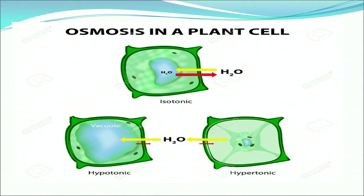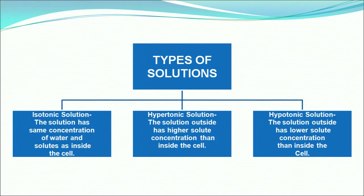Here is an illustration of how osmosis takes place in plant cells, showing three figures. Three types of solutions are isotonic, hypertonic and hypotonic solutions. Hypotonic solutions are those where the outside has lower solute concentration than inside the cell. In hypertonic solution, the solution outside has higher solute concentration than inside the cell. In isotonic solution, the solution has the same concentration of water and solutes as inside the cell.